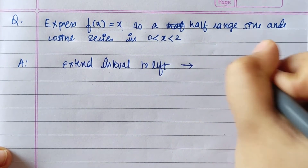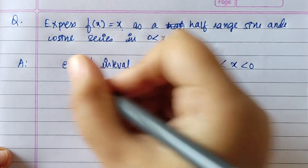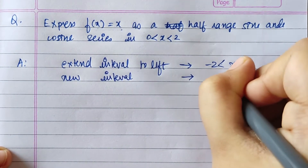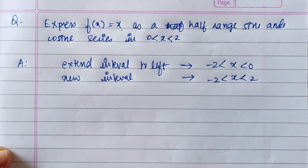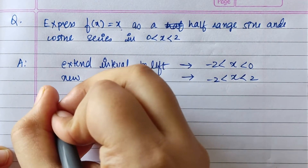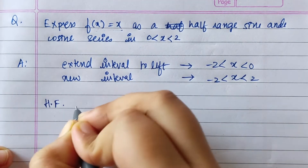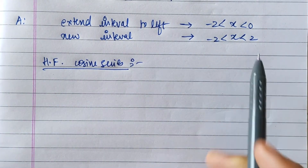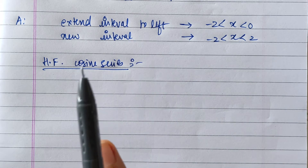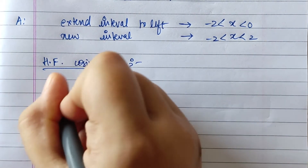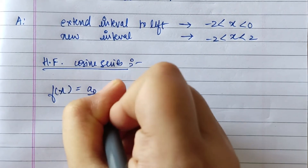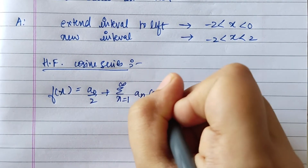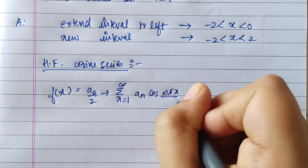So x belongs to 0 to minus 2, and the new interval will be minus 2 to 2. For the half range cosine series, let the function be even in the interval minus 2 to 2 — then it is a cosine series. We will get f(x) equal to a0 by 2 plus summation of n equals 1 to infinity of an cos(n pi x / L).